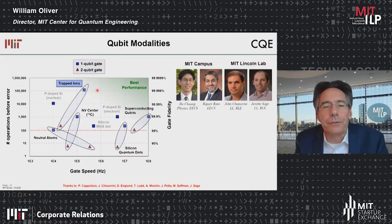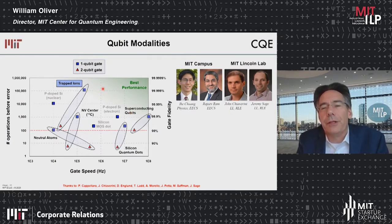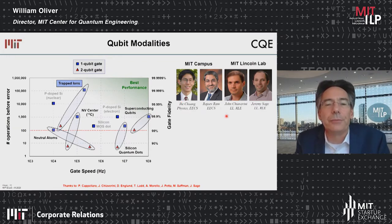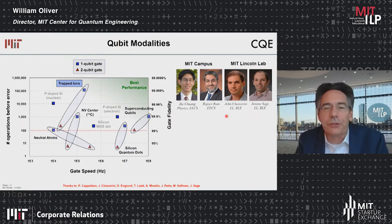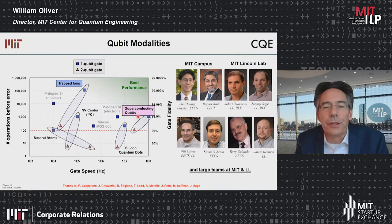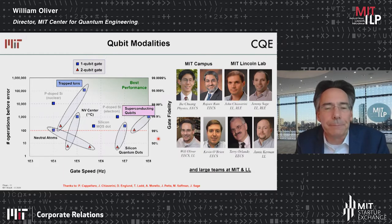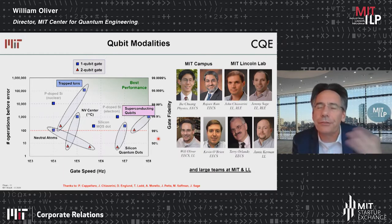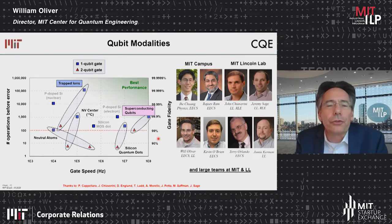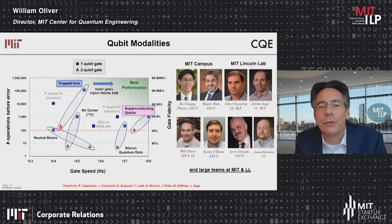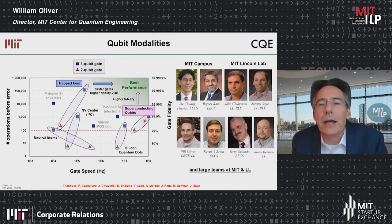One of the two most advanced technologies today is trapped ions. Researchers at MIT campus — Ike Chuang and Rajiv Ram — as well as John Chavarini and Jeremy Sage at MIT Lincoln Lab are investigating trapped ions. The other is superconducting qubits, which is my own research area, along with Kevin O'Brien, Terry Orlando, and Jamie Kerman at Lincoln Lab. Trapped ions are trying to make their gates faster and improve two-qubit fidelity; superconducting qubits are already fast enough and are basically trying to make higher fidelity gates.